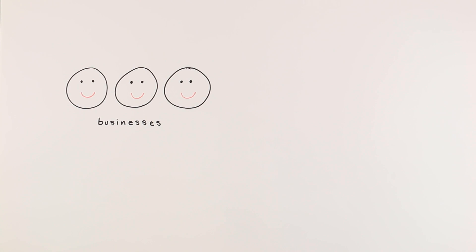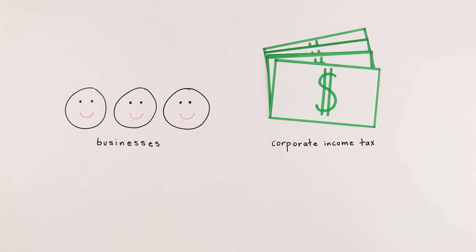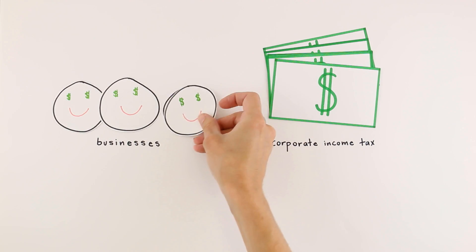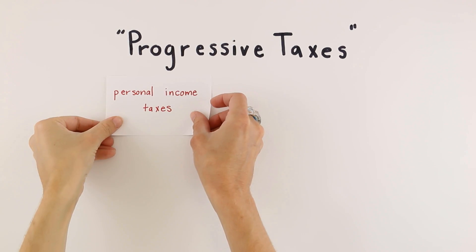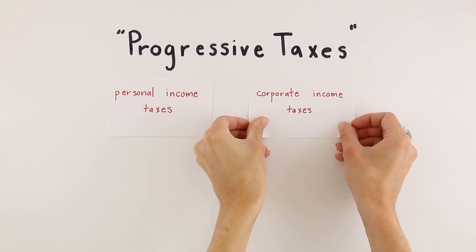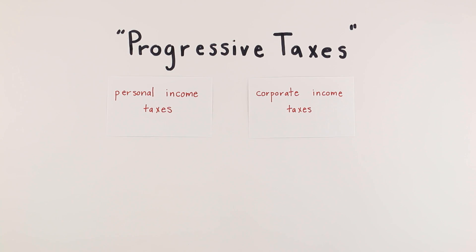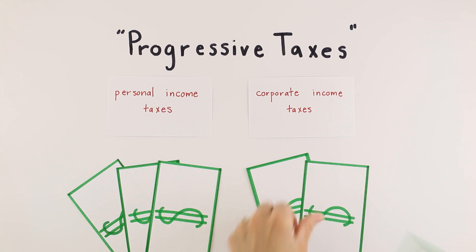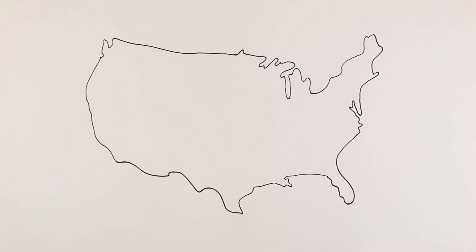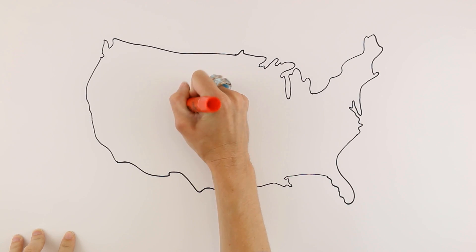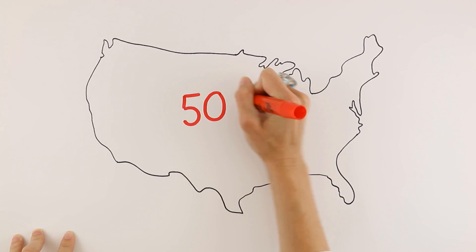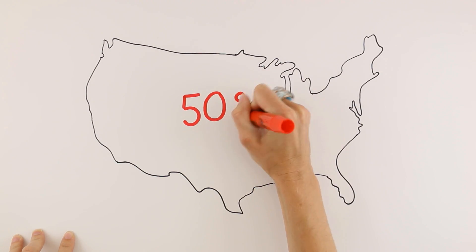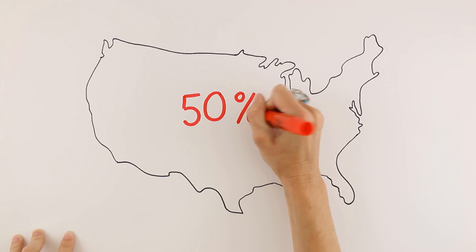Businesses pay something called corporate income tax, which is based on their annual profits. Both personal and corporate income taxes are progressive, meaning the more an individual or business earns, the more money they pay in taxes. Each year, the federal government depends on income taxes for about 50% of its total revenue.